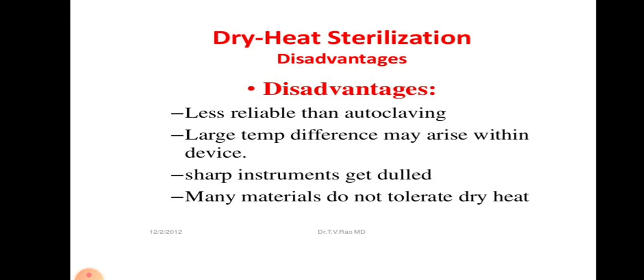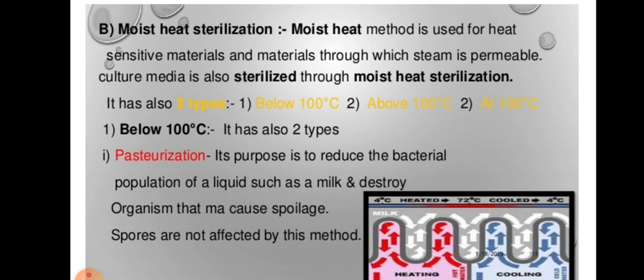Disadvantages of dry heat sterilization: it is less reliable than autoclaving. Large temperature differences may arise within devices. The sharp instruments get dulled. Many materials do not tolerate dry heat. Moving on to the second mechanism, moist heat. Moist heat method is used for heat-sensitive materials and materials through which steam is permeable, like culture media.